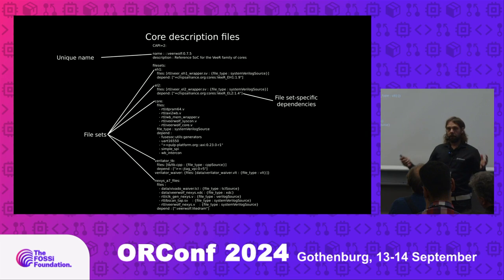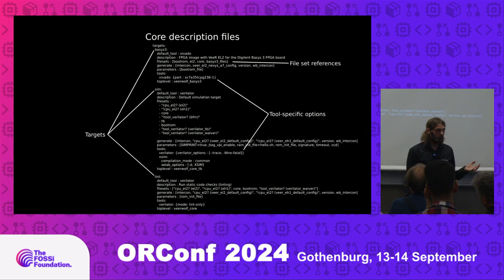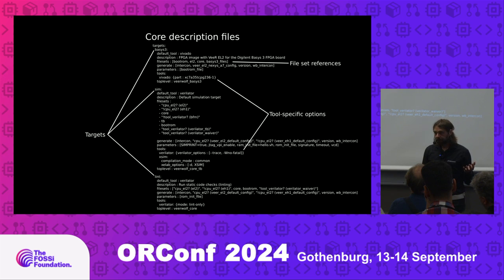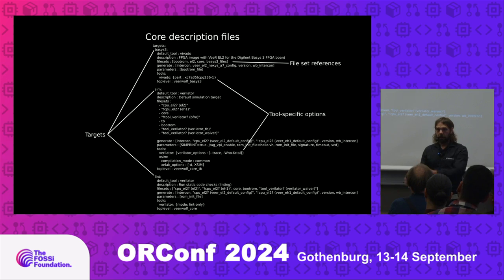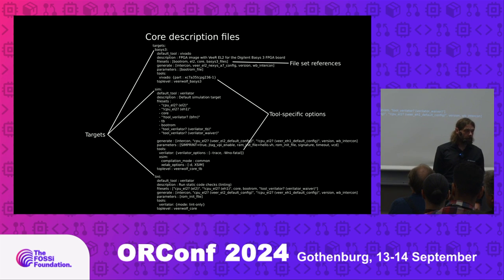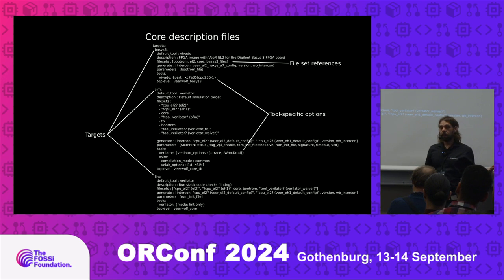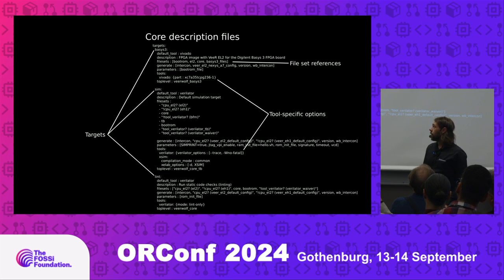In order to actually do something with the IP cores you need to put them through some EDA tools, and for that you have targets. A target is similar to a Makefile target — it's the purpose: I want to do a simulation, I want to do a build for this FPGA board, or I want to target this ASIC technology. In your target descriptions you pull in the file sets you need, specify which parameters are relevant, and also tool-specific options like simulator flags or telling an FPGA tool which exact device you're targeting.